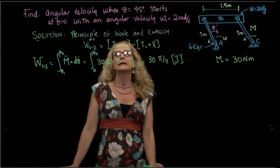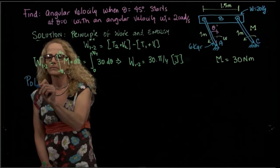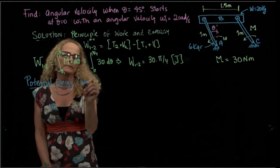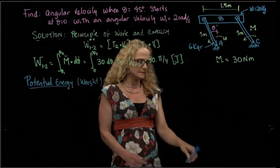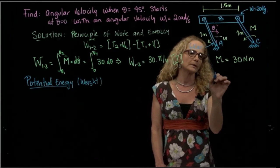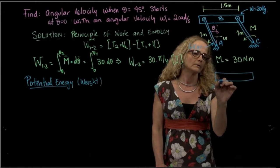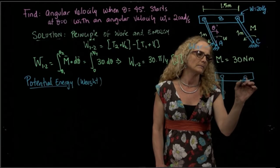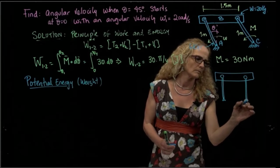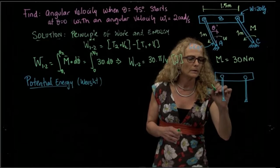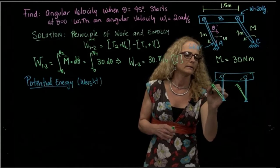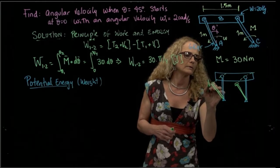Now that we have calculated the work, let's calculate the other elements — the potential energy. The potential energy is affected only by the weight, so we have to calculate the distance each element moves down. If we put our system in the first position where theta equals 0 and go to the other position, the block undergoes a circular displacement to its new location at about 45 degrees.